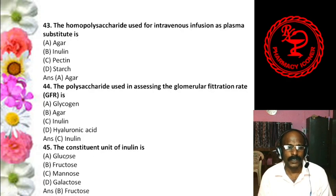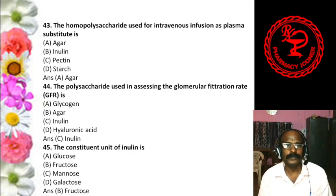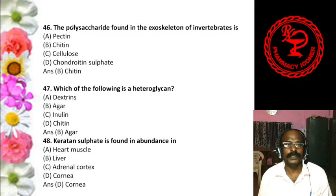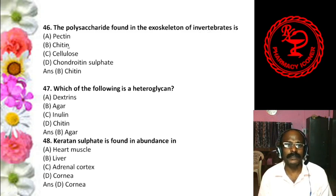Question 8: Glucose on reduction with sodium amalgam gives — A. Sorbitol, B. Mannitol and sorbitol, C. Dulcitol and mannitol. The answer is A, sorbitol. So on reduction of glucose we get sorbitol. Note: a question may also come on the oxidation of glucose, which we will see later.